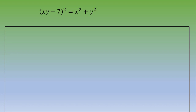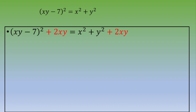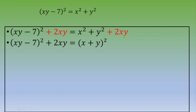The double product is missing, so let's add the double product 2xy to both the right and the left at the same time. Now on the right, we have the remarkable identity a squared plus 2ab plus b squared, so you can transform the right side into (x plus y) squared.